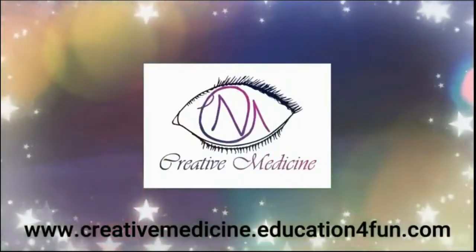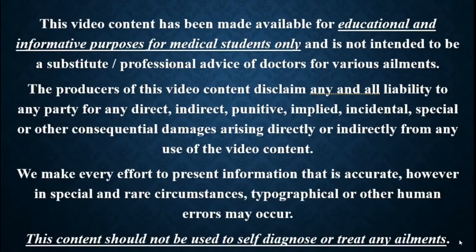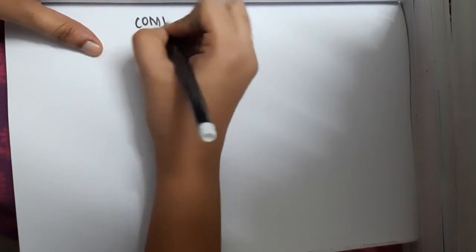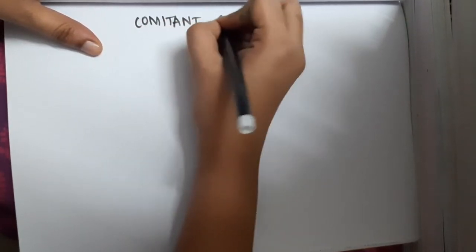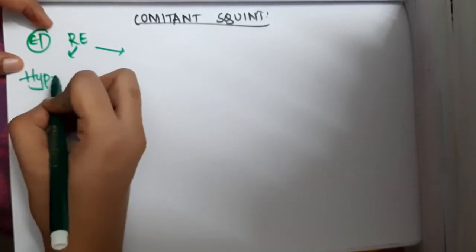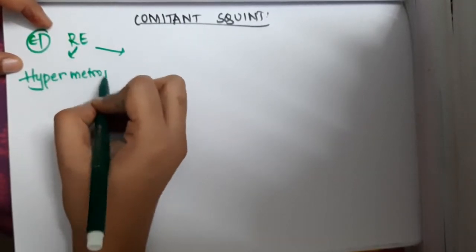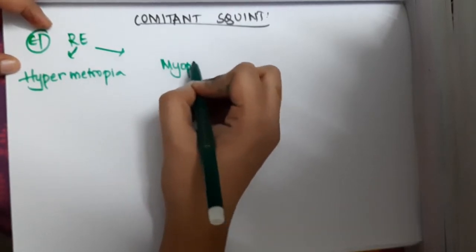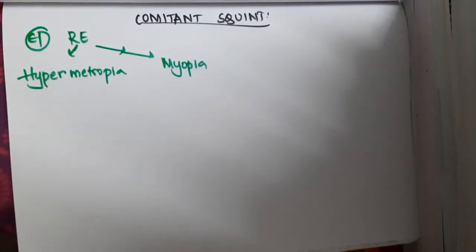Welcome to Creative Medicine. In this lecture we will learn some important points about concomitant squint. Looking at the etiology of concomitant squint, it mainly occurs due to refractive error. There are two types of refractive error: hypermetropia and myopia.